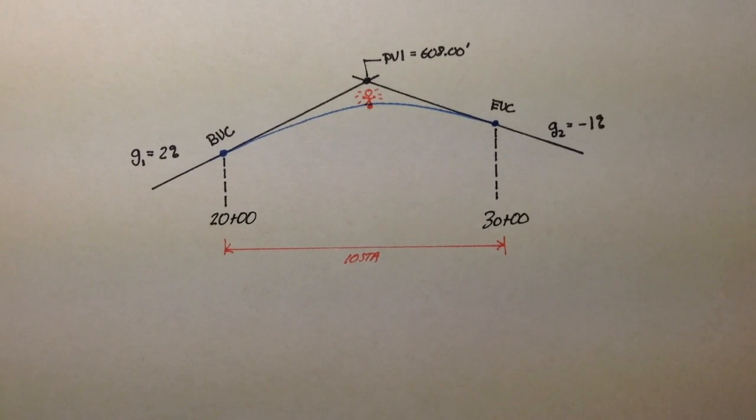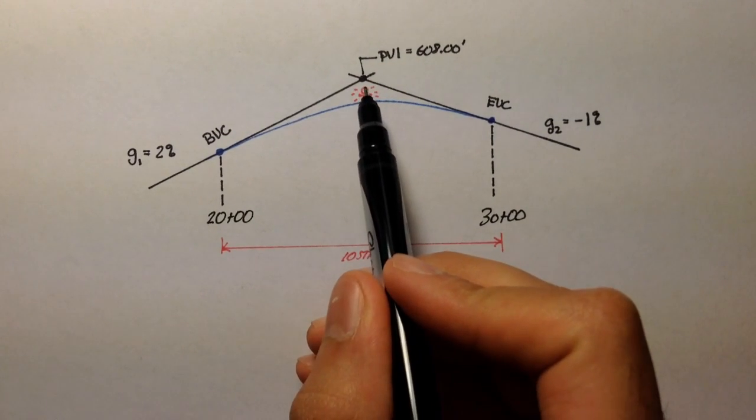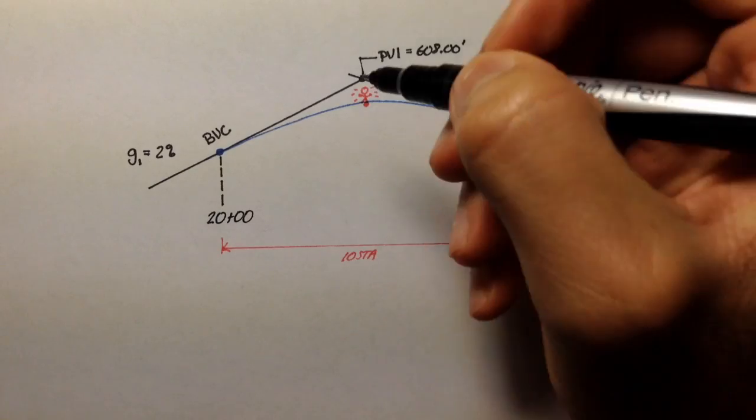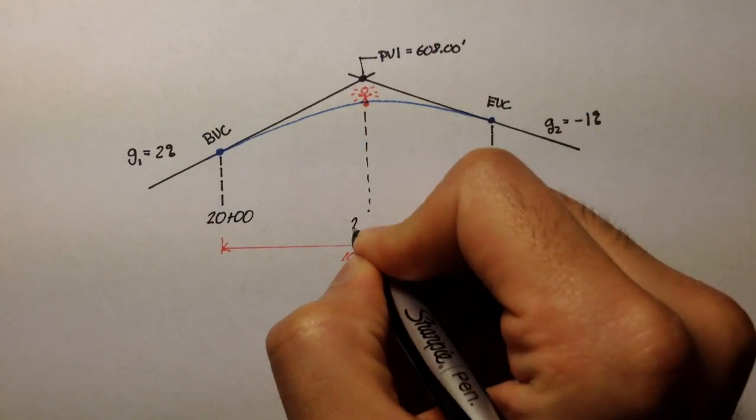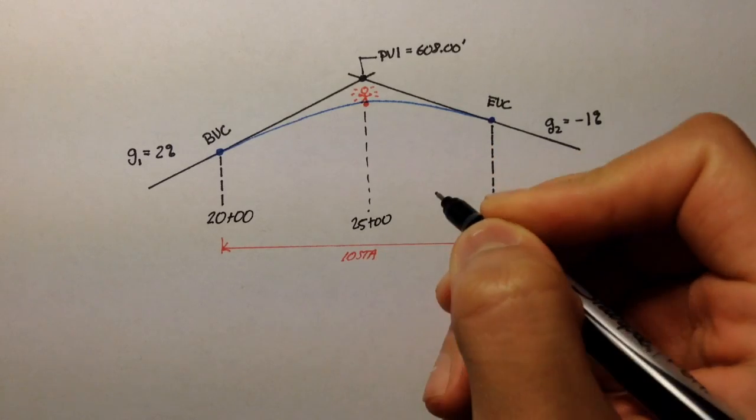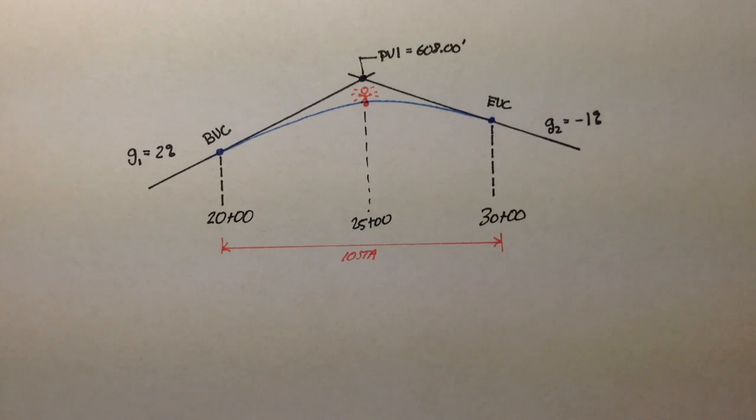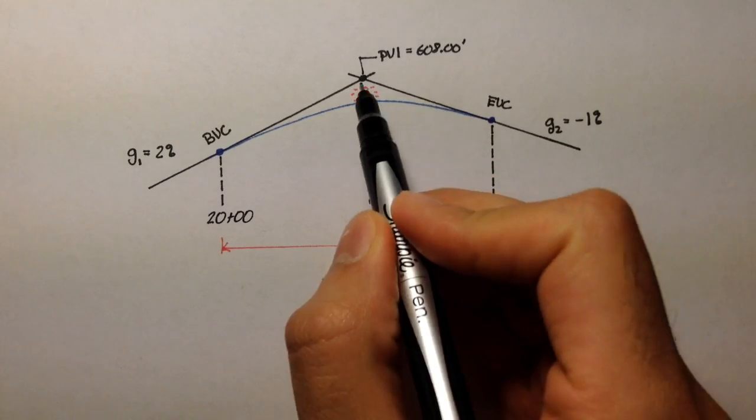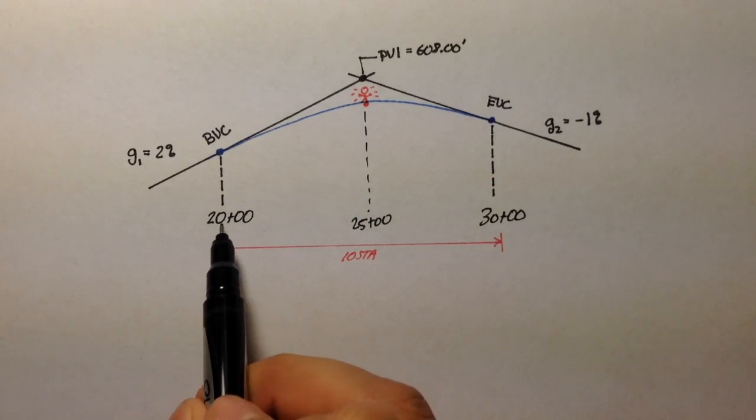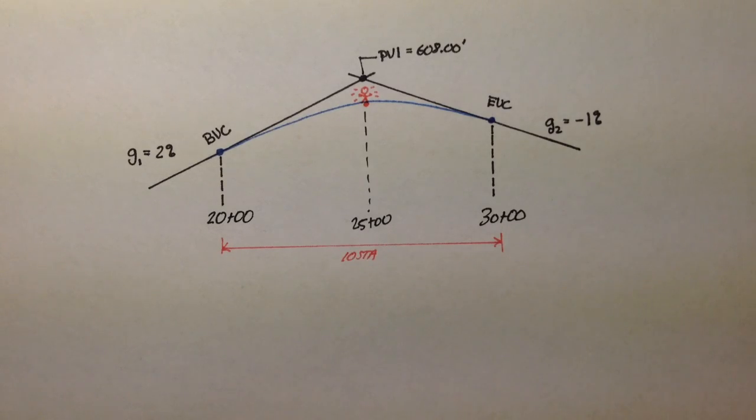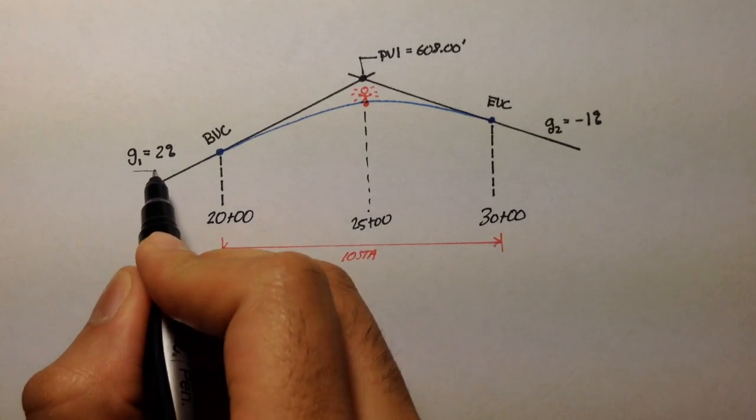We want to find out the elevation of BVC and EVC, and we can do that pretty simply. We know the elevation of PVI and we know the grade. We also know that PVI is located at 25 plus 0, at the middle of this vertical curve.